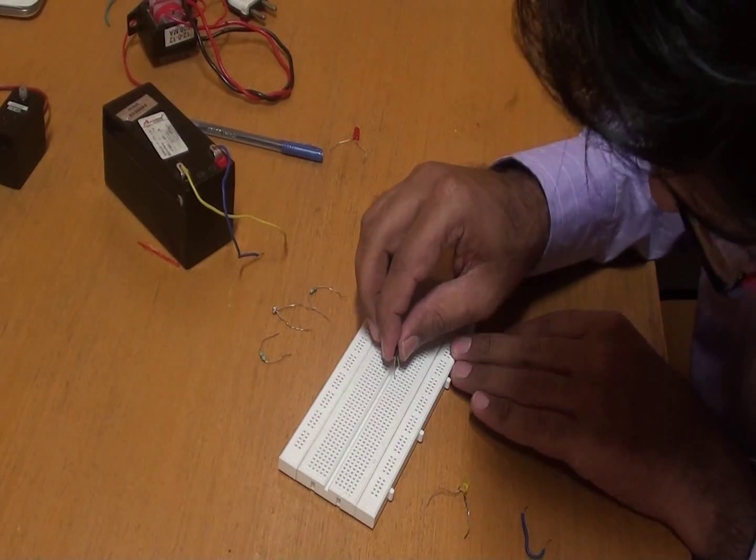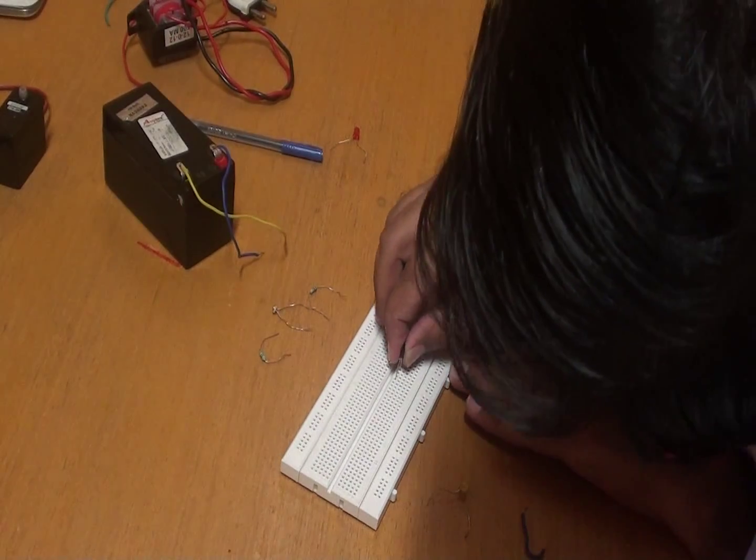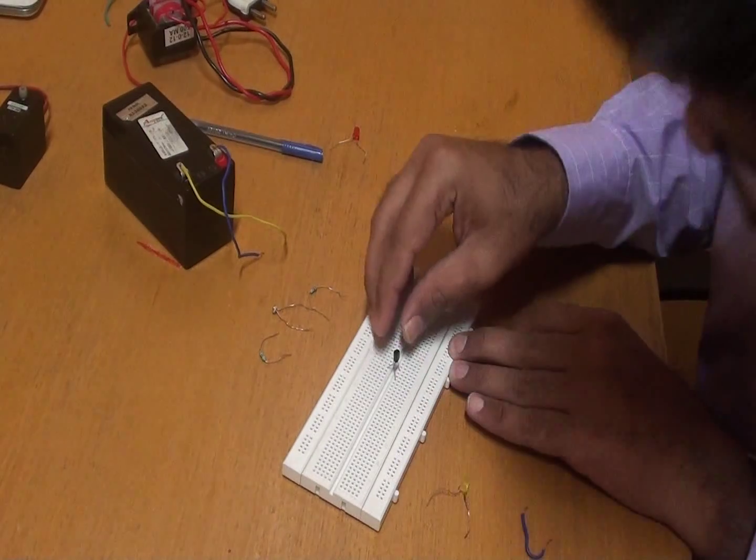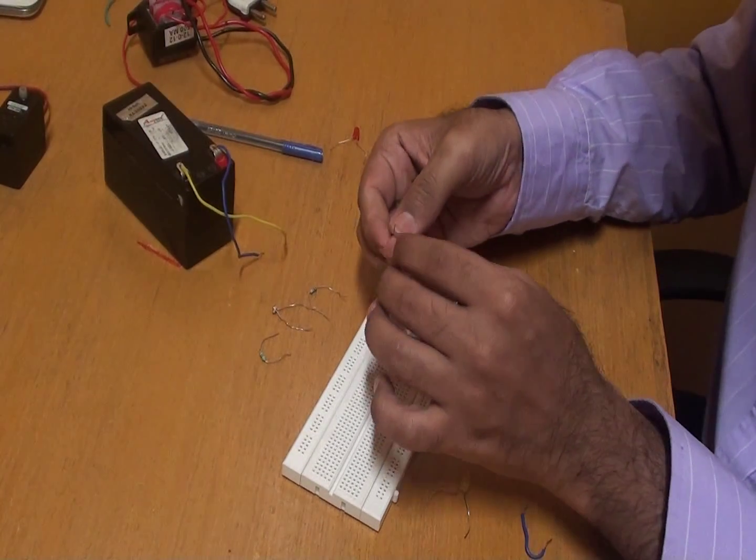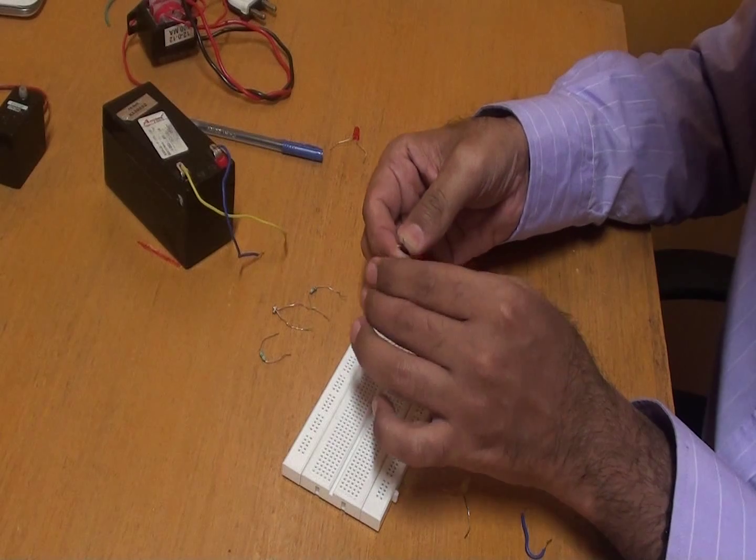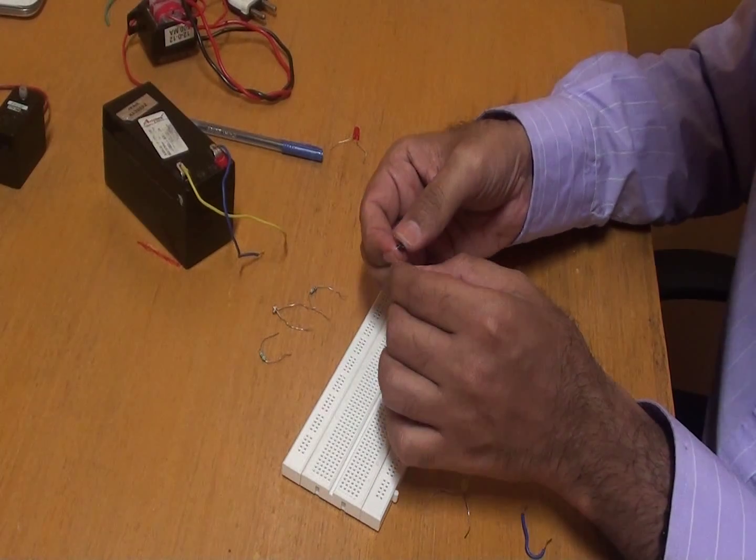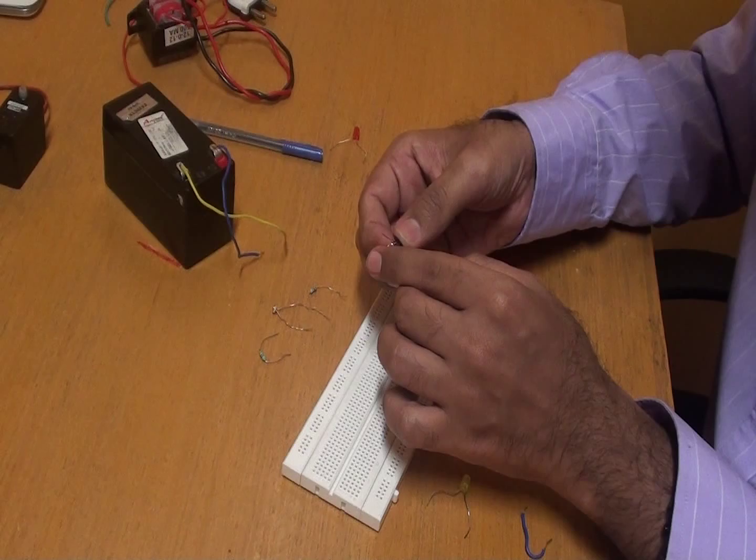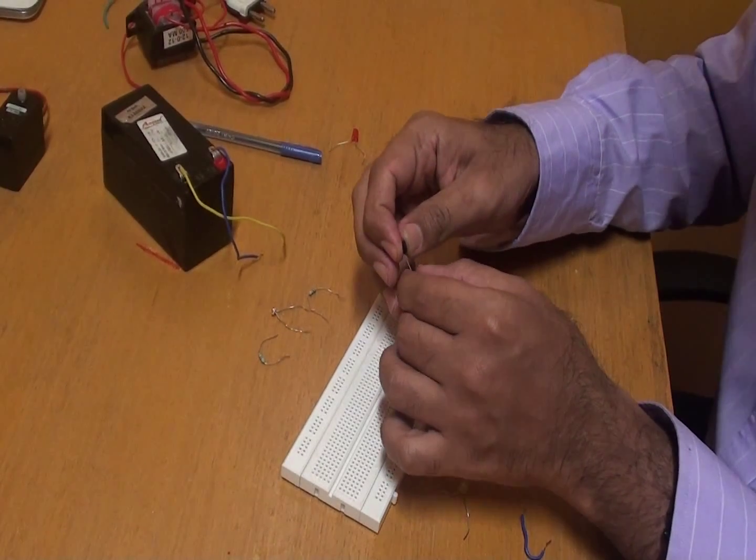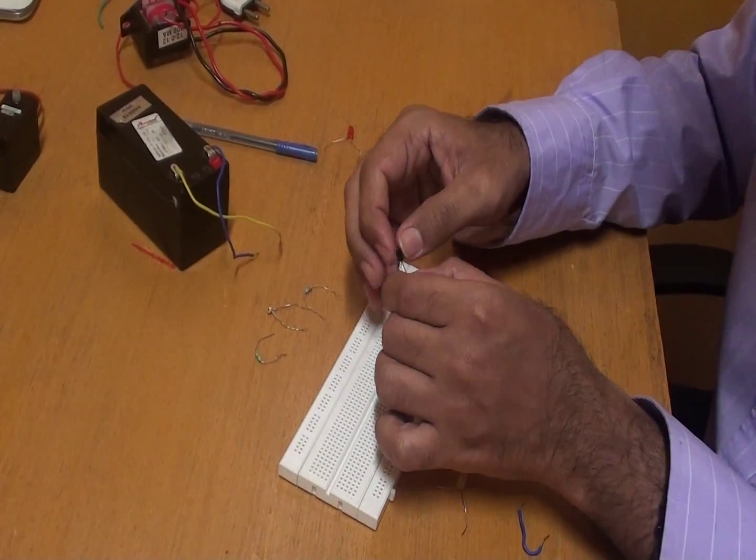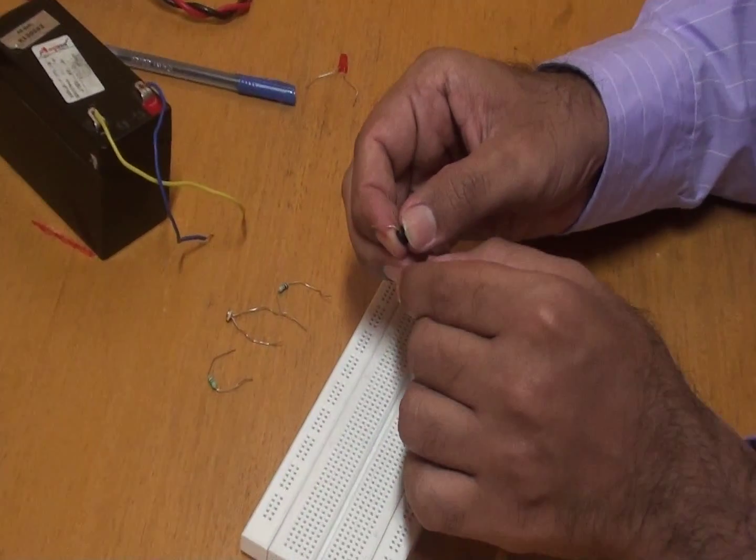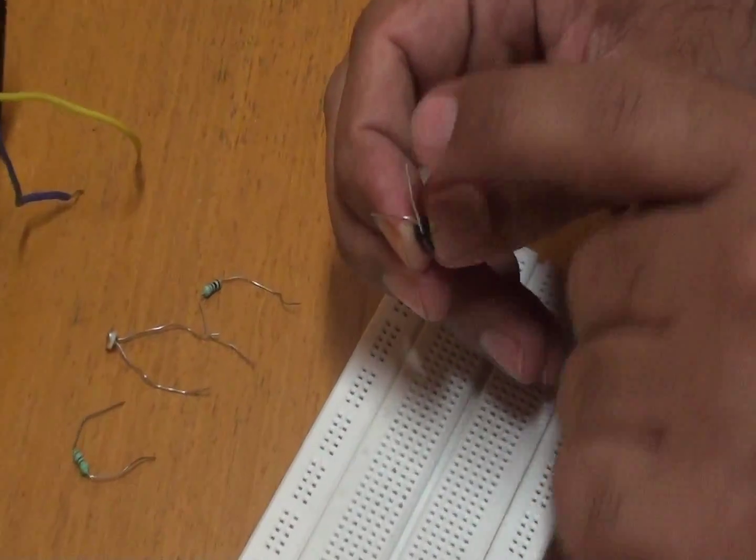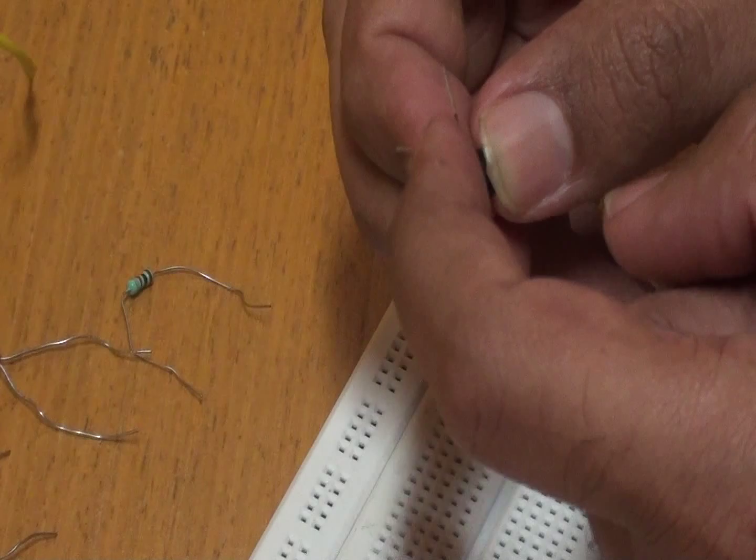So here initially I just connect the BC547. Before that I can give an explanation. I just want to say what are the pins in BC547. So as we know the middle pin is always the base, and this pin is the collector, and this is the emitter. Or I could say like this: this is the collector, this is the base, and this is the emitter.